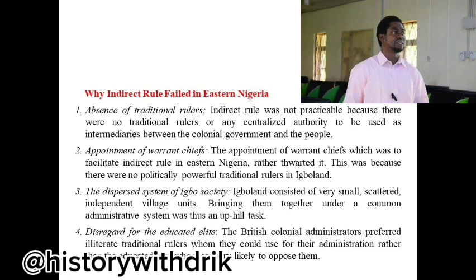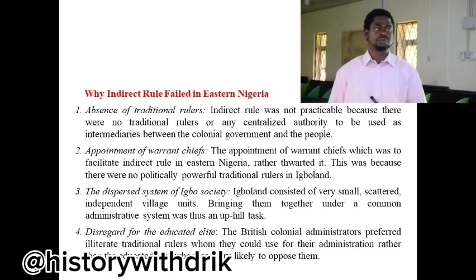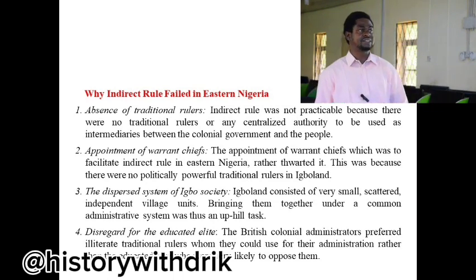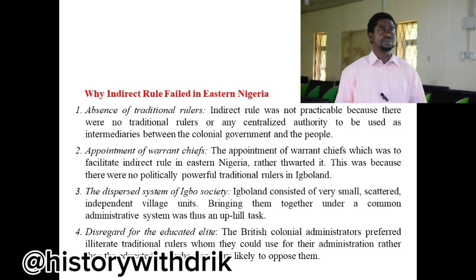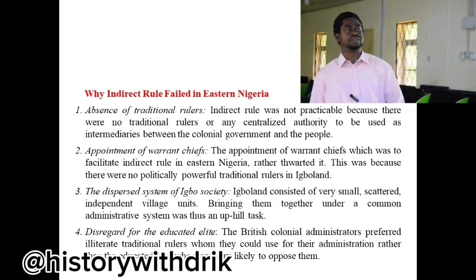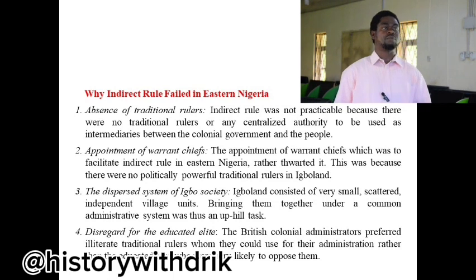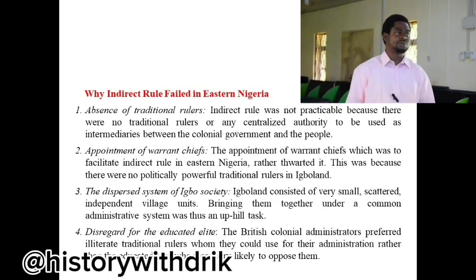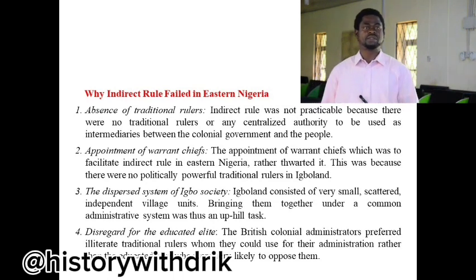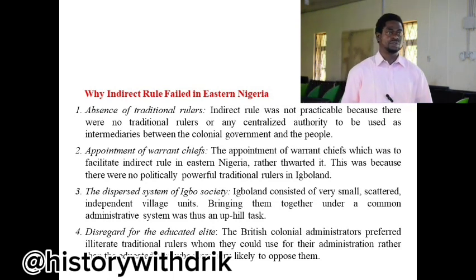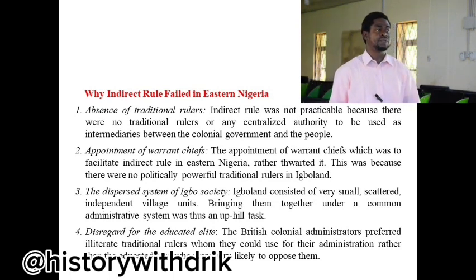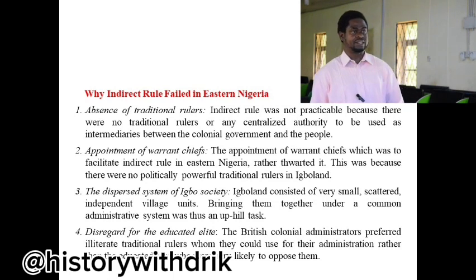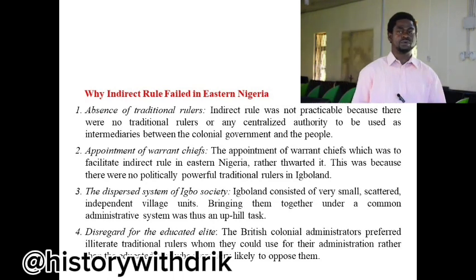Point number three was the dispersed system of Igbo society. Igbo land consisted of very small, scattered, independent village units, and bringing them together under a common administrative system was thus an uphill task. Point number four was the disregard for educated elites. The British colonial administrators preferred illiterate traditional rulers, whom they could use for the administration, rather than the educated elites, who were very likely to oppose them.